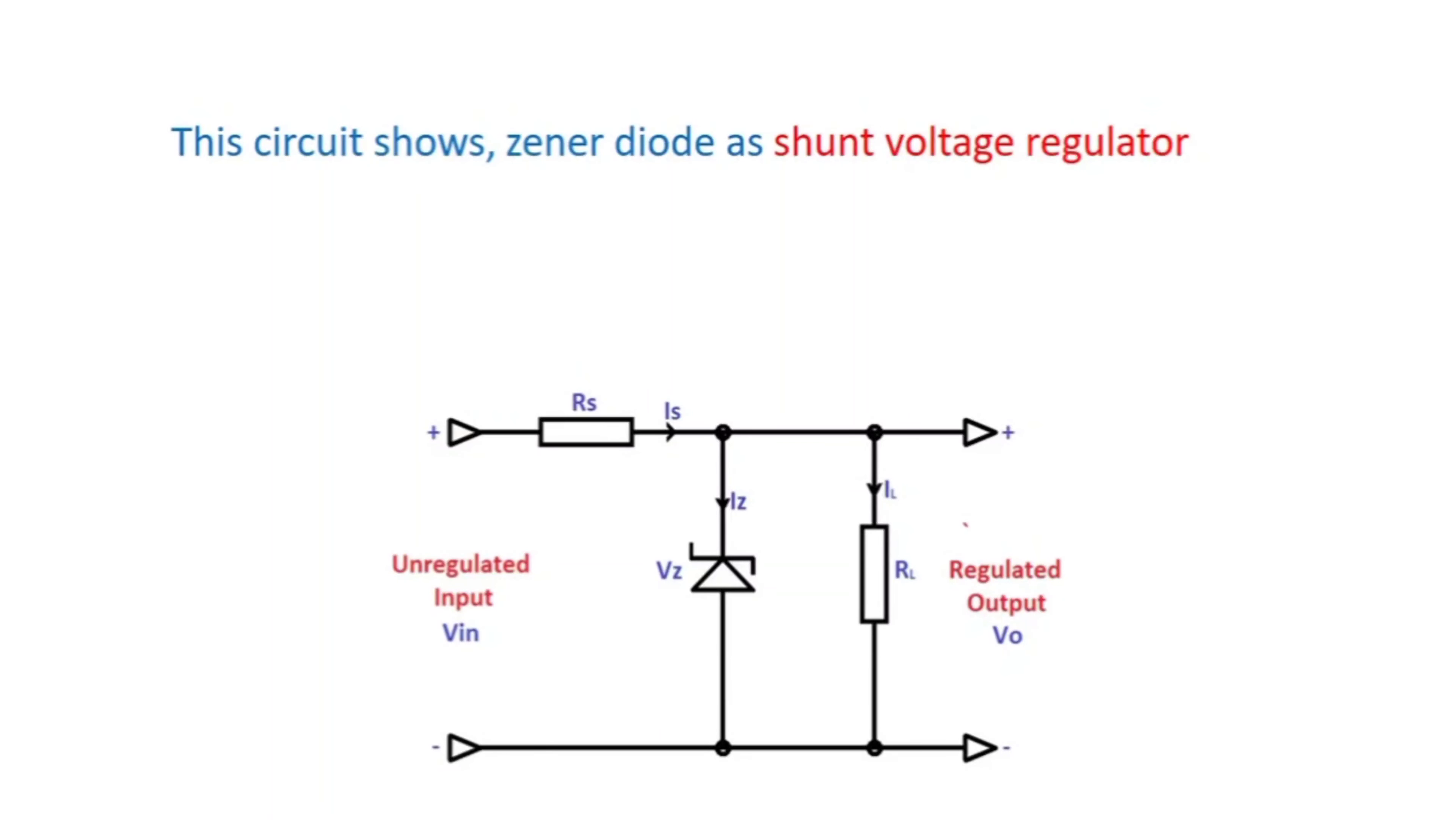Where RL is the load resistance. Source V connected as unregulated input or UPS input voltage is connected, plus and minus. The Zener diode, negative terminal and positive terminal are connected in reverse bias direction. The Zener diode is reverse bias connected across the input voltage V input, where variations are to be regulated. Wherever you want to control output voltage, connect Zener diode in reverse bias direction, then it controls the output voltage.